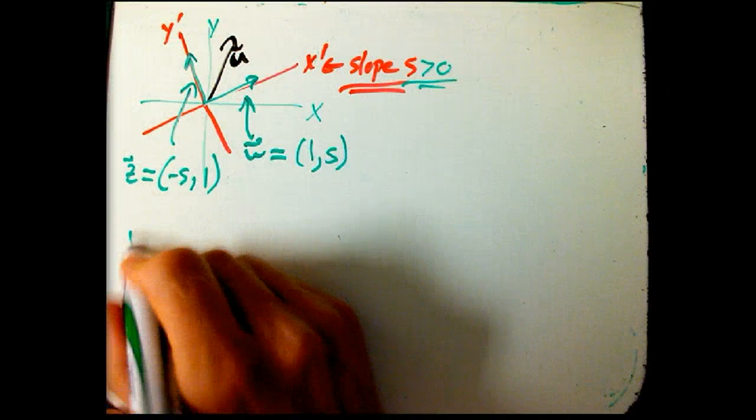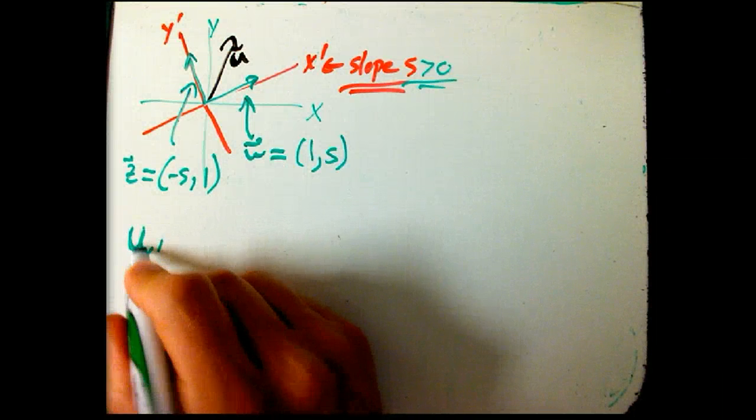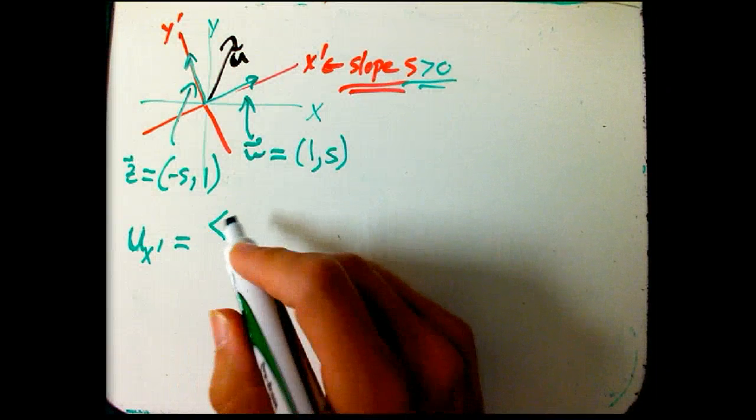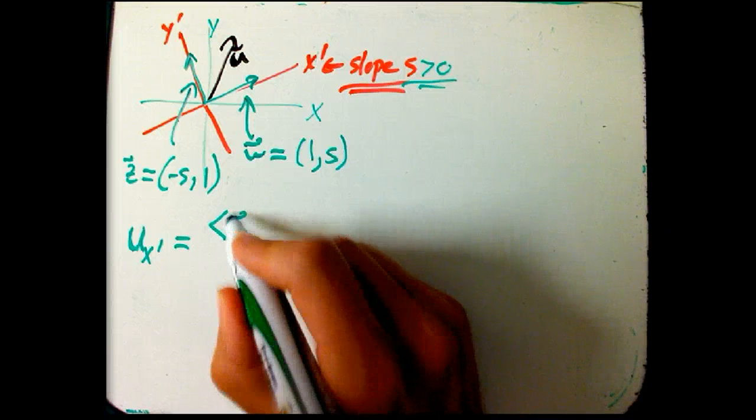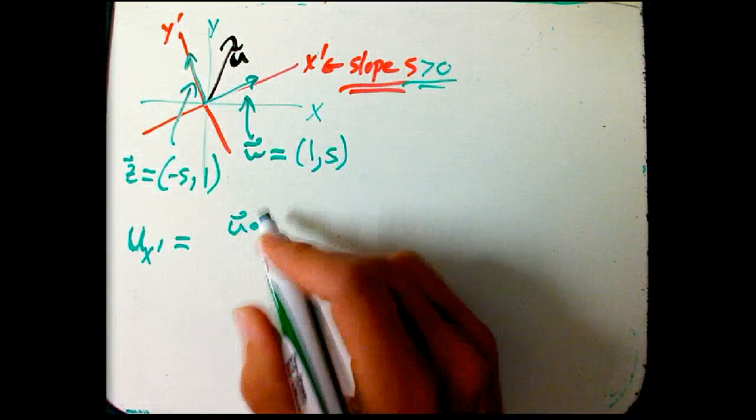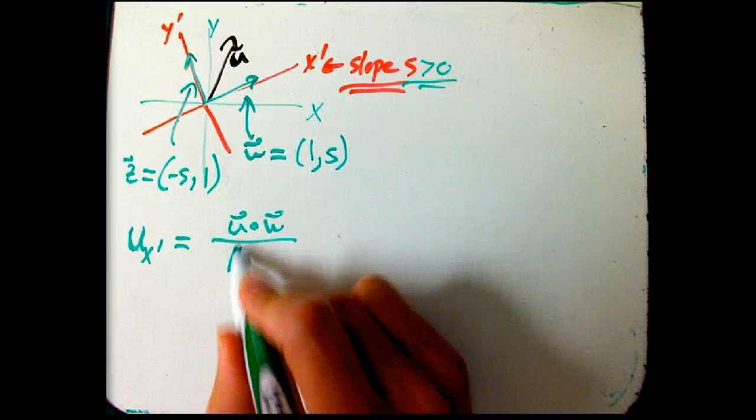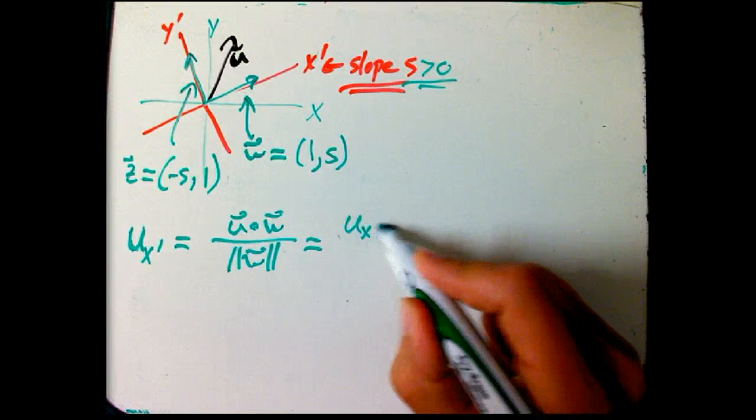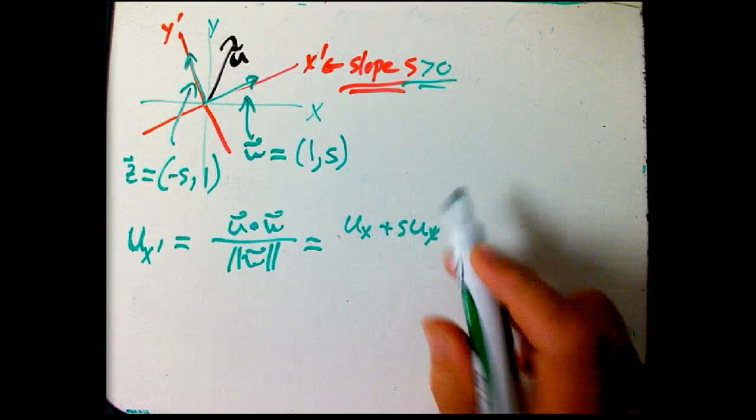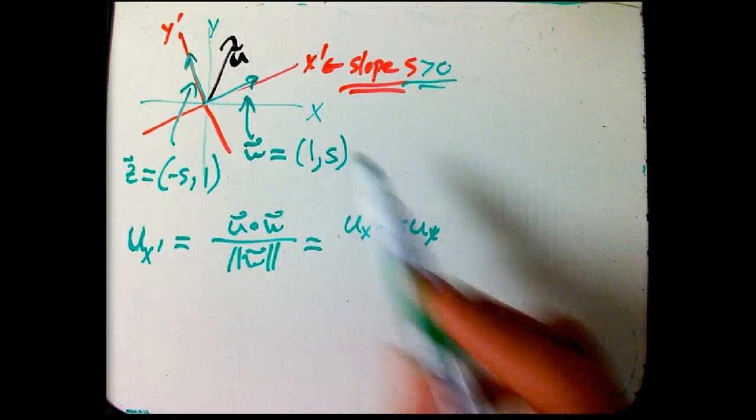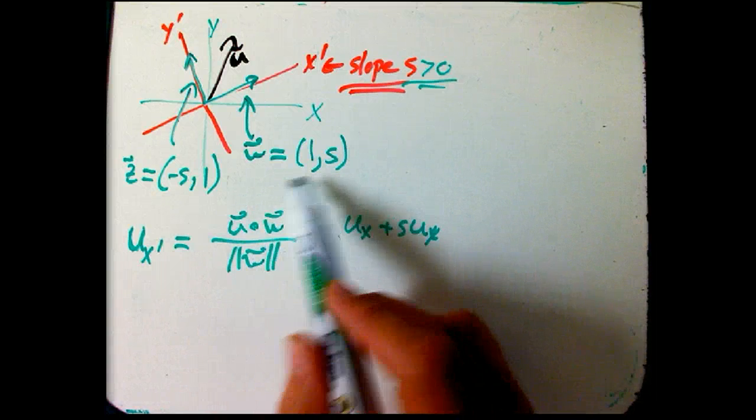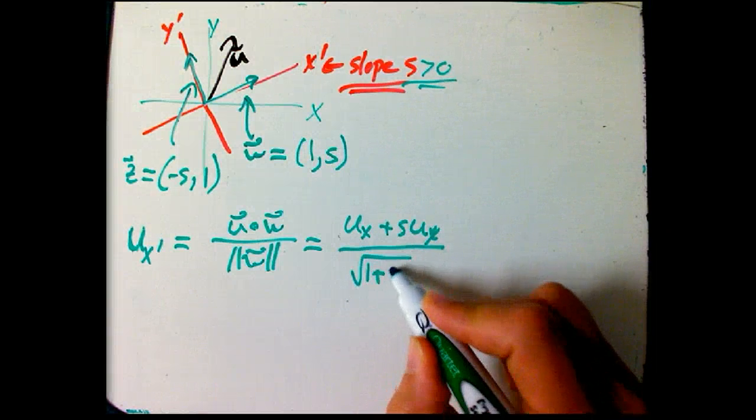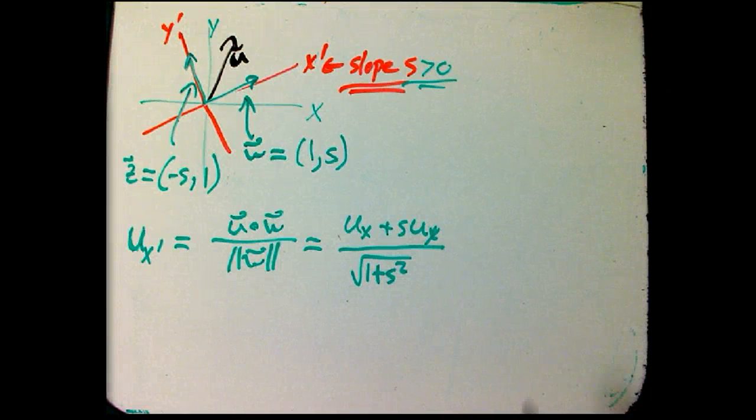Okay, so now we can do the projections again. U sub X prime is going to be the dot product of U with W over magnitude of W. So now that's UX plus S UY, just taking UX and UY, which is the vector U, and dotting it with this guy. Dividing by, now this is no longer a unit vector, its magnitude is square root of 1 plus S squared.